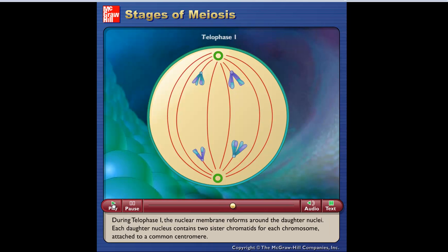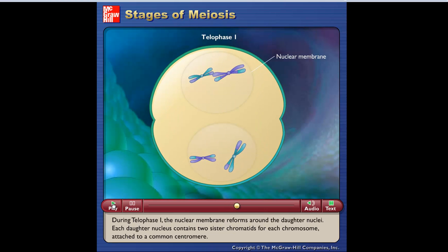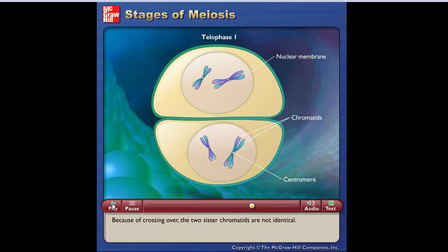During telophase I, the nuclear membrane reforms around the daughter nuclei. Each daughter nucleus contains two sister chromatids for each chromosome attached to a common centromere. Because of crossing over, the two sister chromatids are not identical.